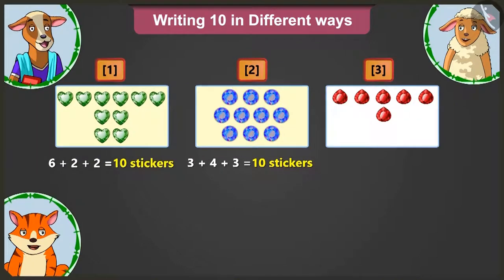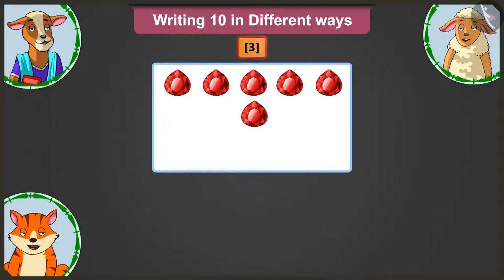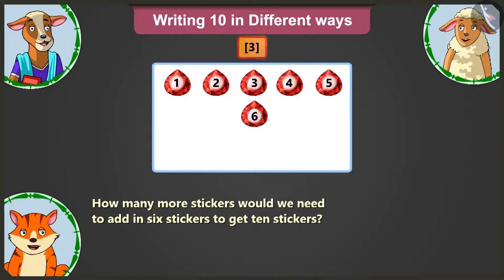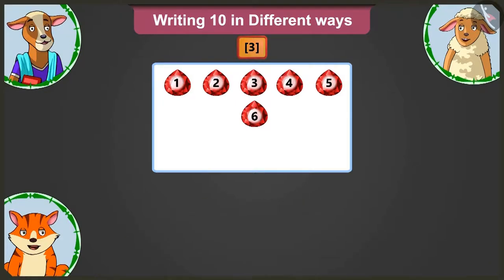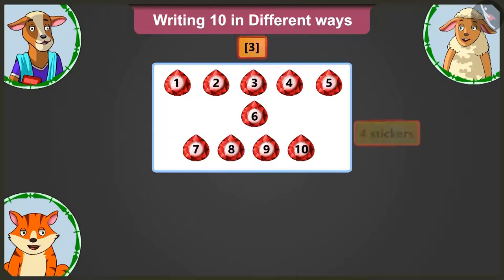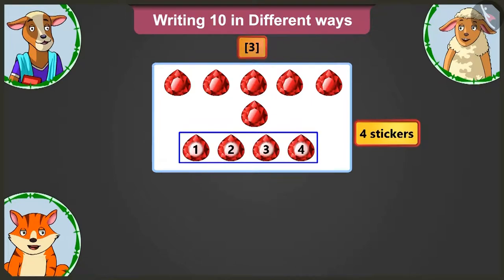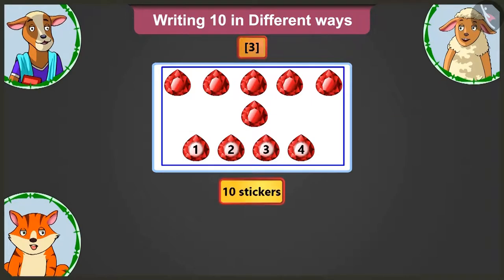Come on, Billy. Now you tell me how many stickers are there on the third card? There are 1, 2, 3, 4, 5 and 6 stickers. Billy, adding how many stickers to 6 stickers will make them 10 stickers? Adding the numbers 7, 8, 9 and 10. That is, adding 4 more stickers will make it 10 stickers.